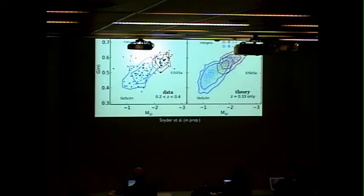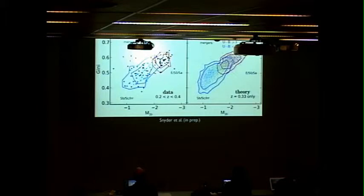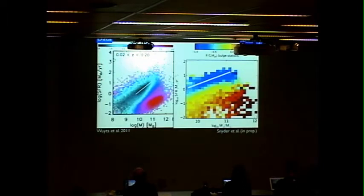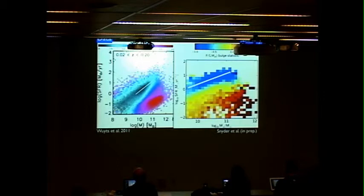Here's the same information shown side by side with contours outlining a certain cut in optical color. We can also frame this differently and look at the star formation rate versus stellar mass — from observations on the left and from the Illustris simulation on the right — using a diagnostic made from the Gini-M20 diagram, which is not exactly the Sersic index but is proportional to it. It's sort of a bulginess statistic: galaxies in the upper right are bulgy, lower left are disky.